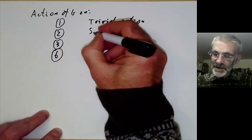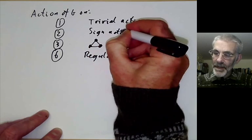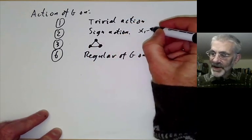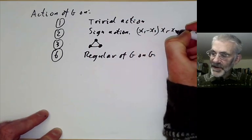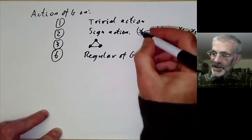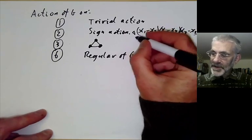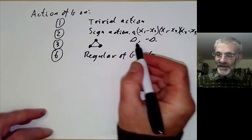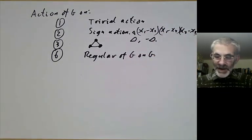Then there's the sign action. If G acts on the polynomial (x1-x2)(x1-x3)(x2-x3), it changes this polynomial either to delta or minus delta, so it's acting on this two-point set of delta and minus delta.